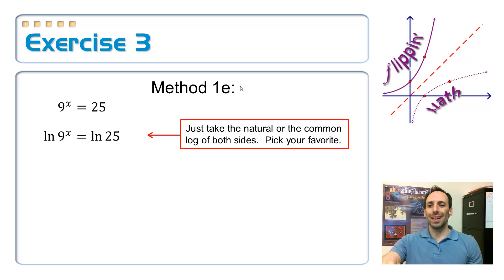So, natural log of 9^x is equal to the natural log of 25. Over on the left-hand side, this does not cancel out this time. That's okay. The reason why it doesn't cancel out is because the bases are not the same.